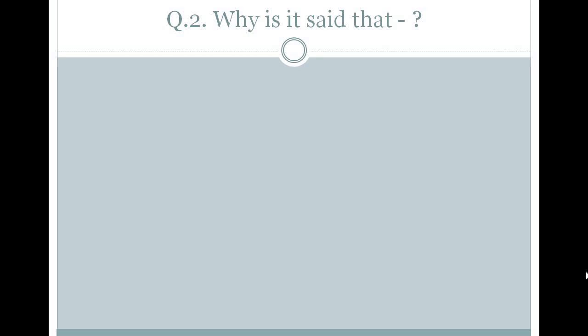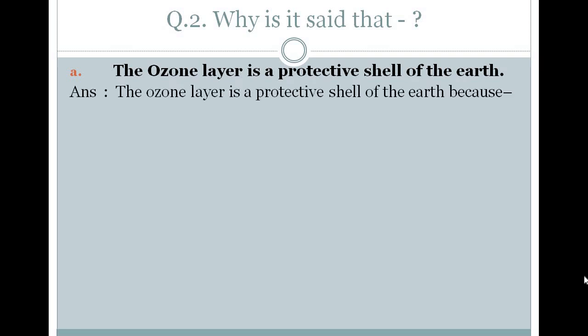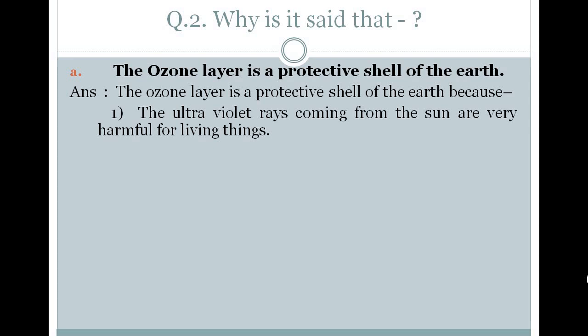Question number 2 is: why is it said that? The first question asked is: the ozone layer is a protective shell of the earth. We have to give the answer for why the ozone layer is called a protective shell of the earth. The answer is: the ozone layer is a protective shell of the earth because the ultraviolet rays coming from the sun are very harmful for living things.